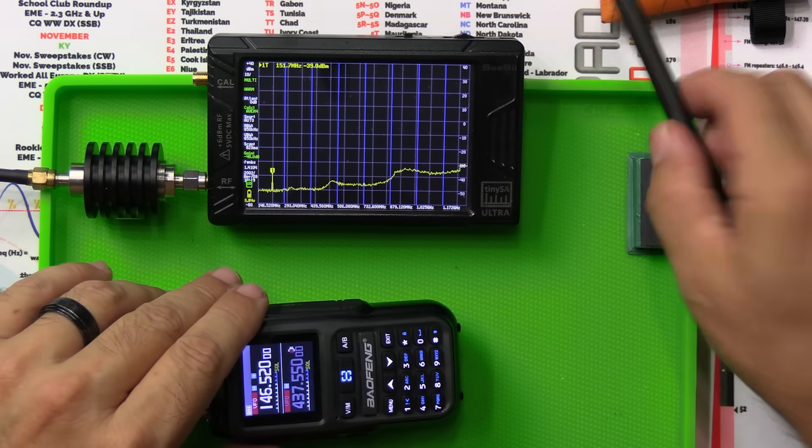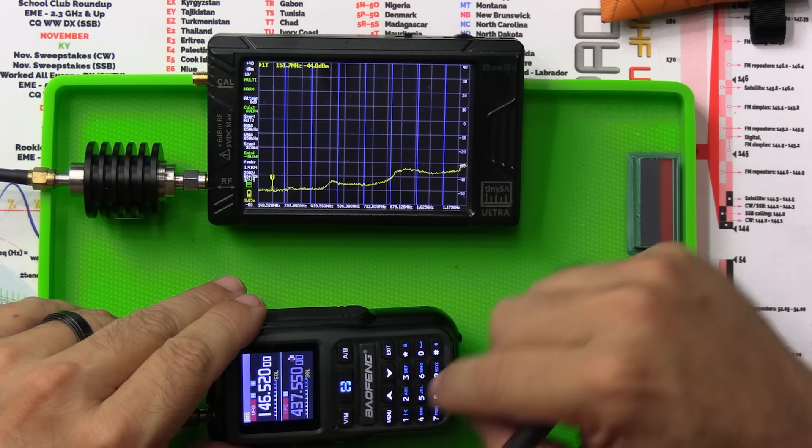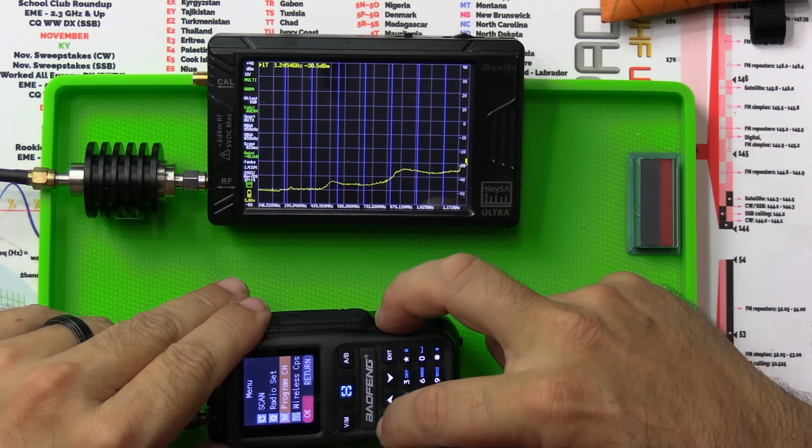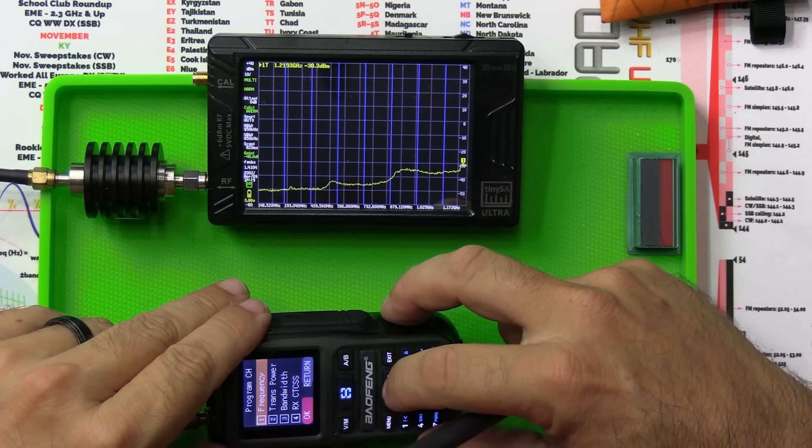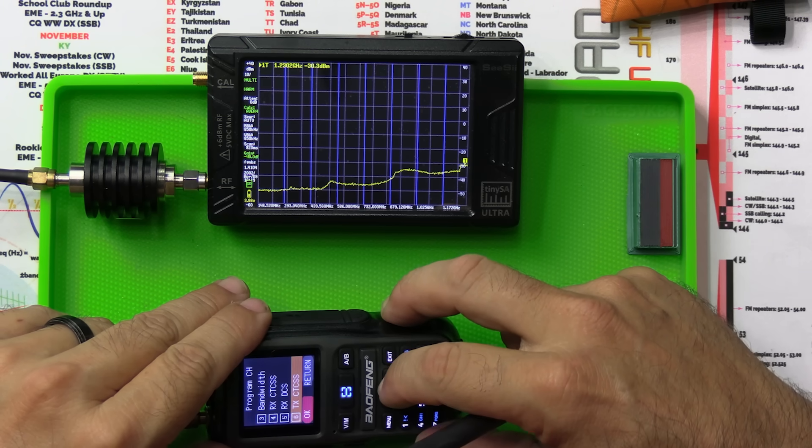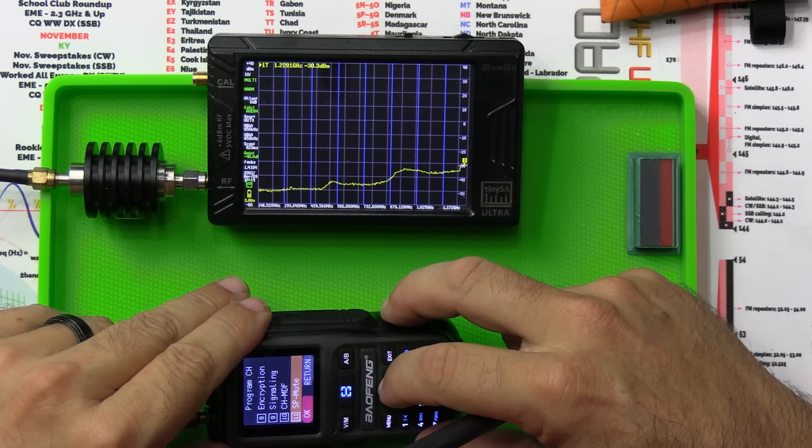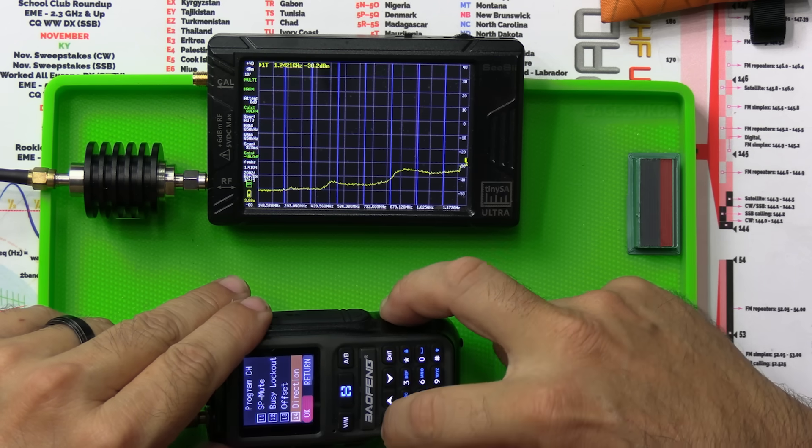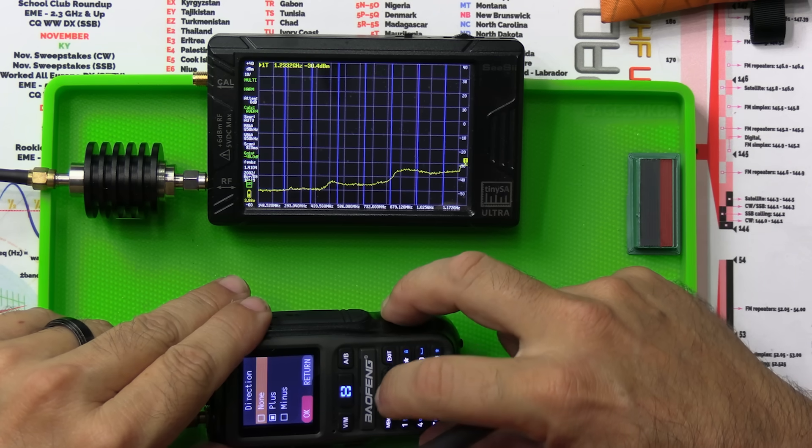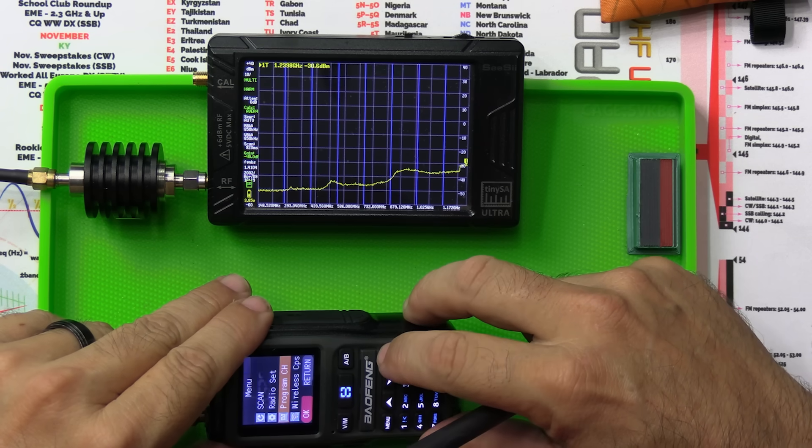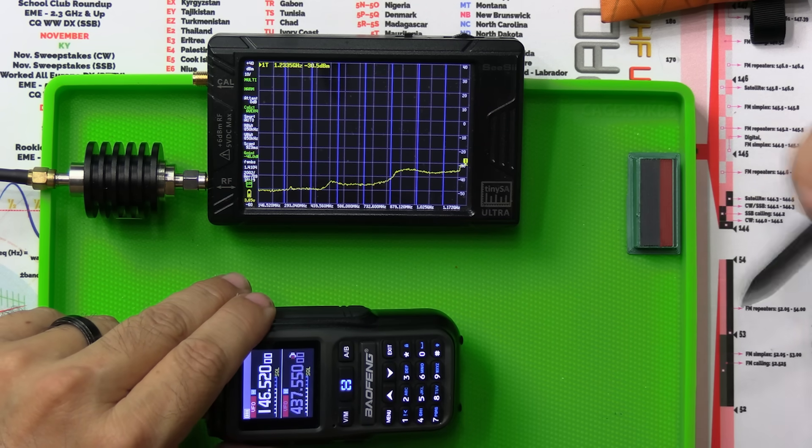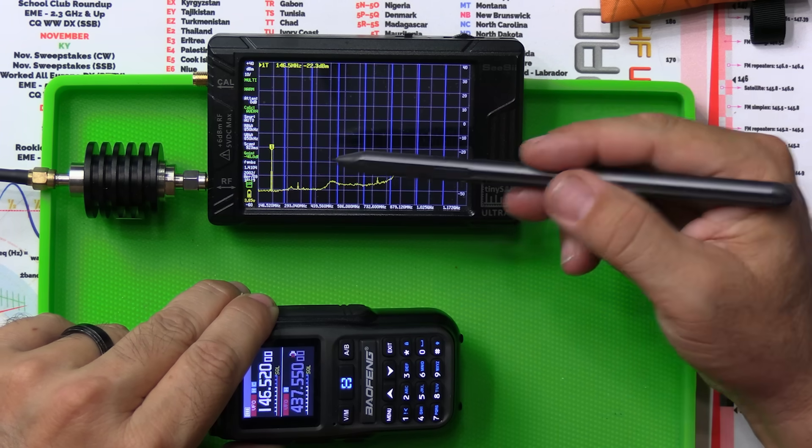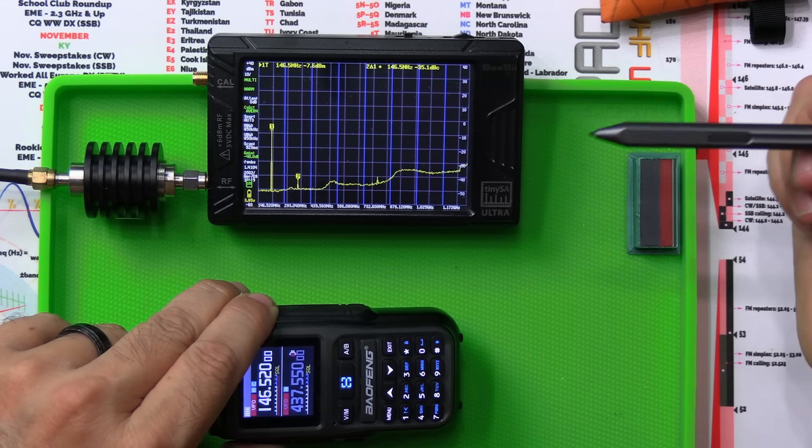And now we're going to key up right here. We're going to see what it does. Oops. I'm on an offset. So let's go fix that real quick. I'm just going to change the direction to none. That's going to... There we go. Now... There it goes. Right there.